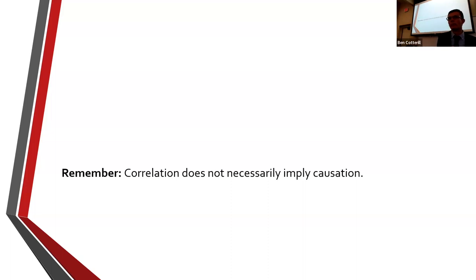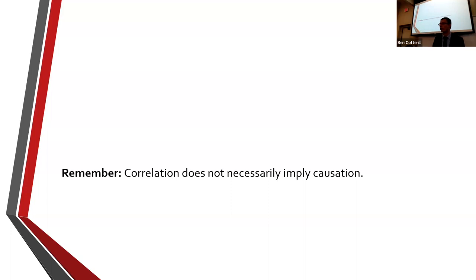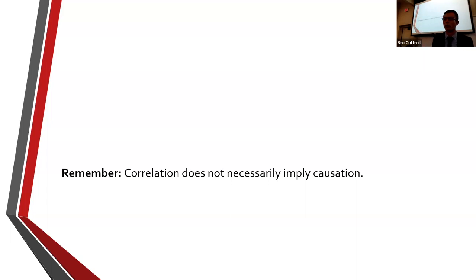Another example: if we look at the number of Nobel prizes won by a country, it correlates with the number of chocolate bars purchased within that country. Does eating more chocolate cause people to win more Nobel prizes? Obviously not. The other variable is wealth — countries with more money have more money to spend on chocolate bars and also on scientific discoveries that win Nobel prizes. Sometimes two variables are reliably correlated but not directly tied — there's some other variable explaining the association.